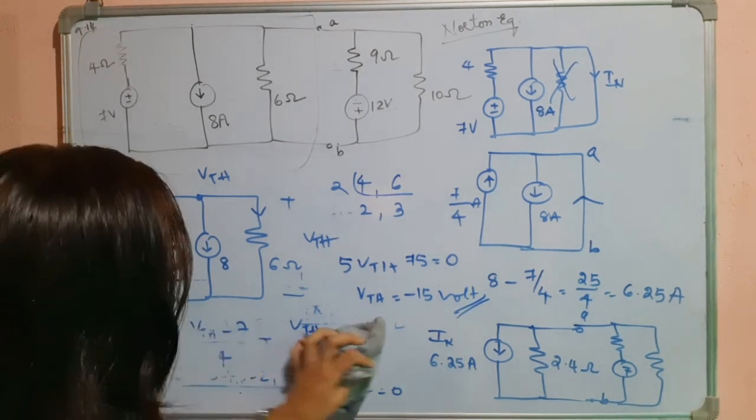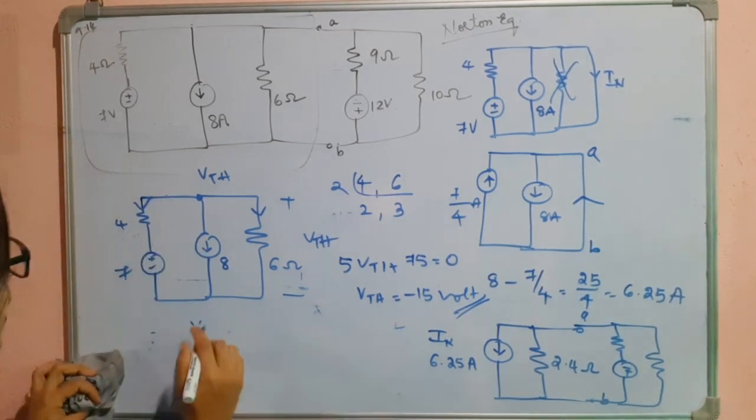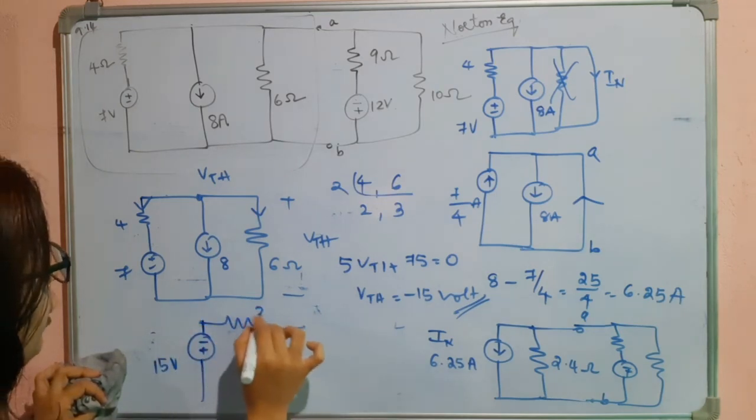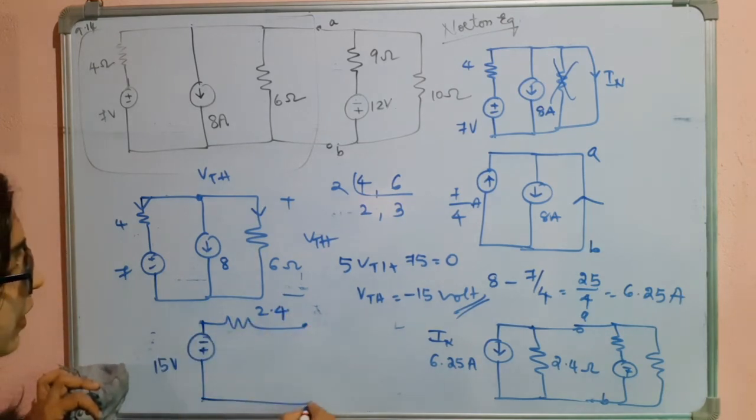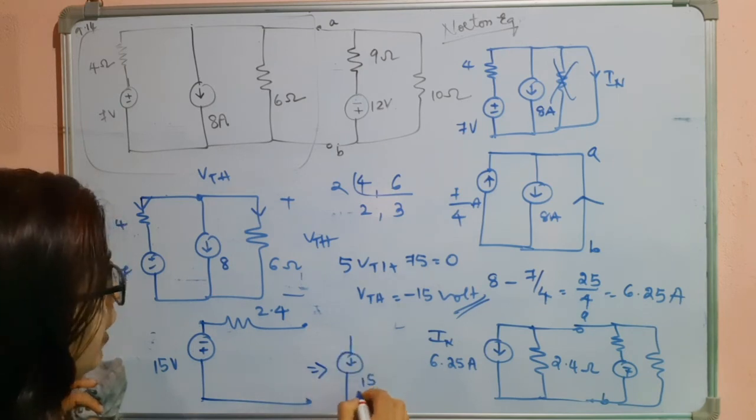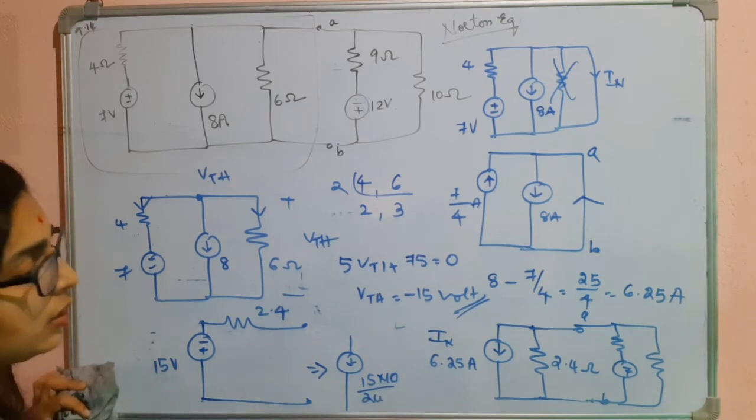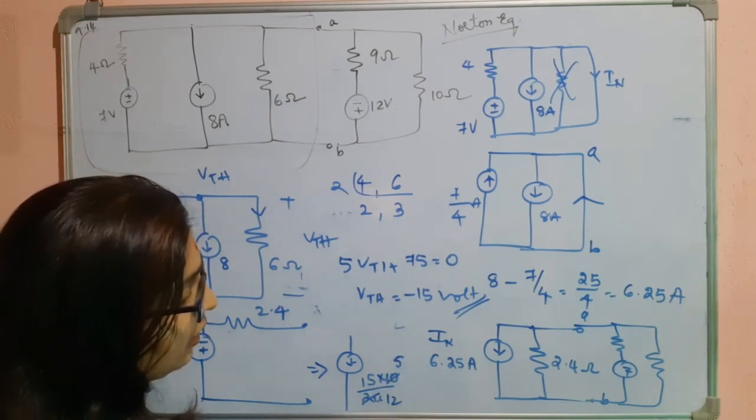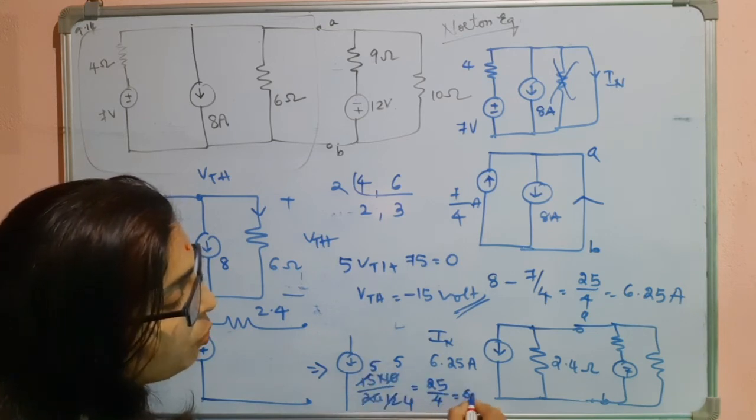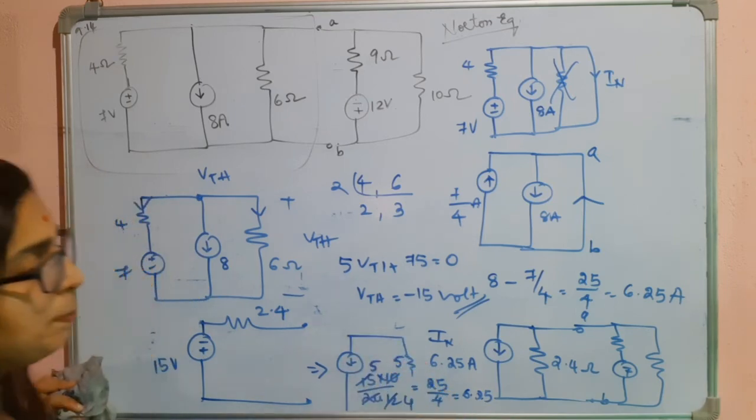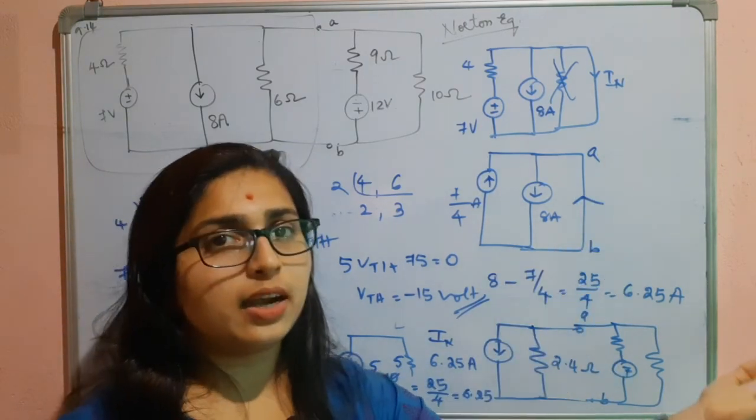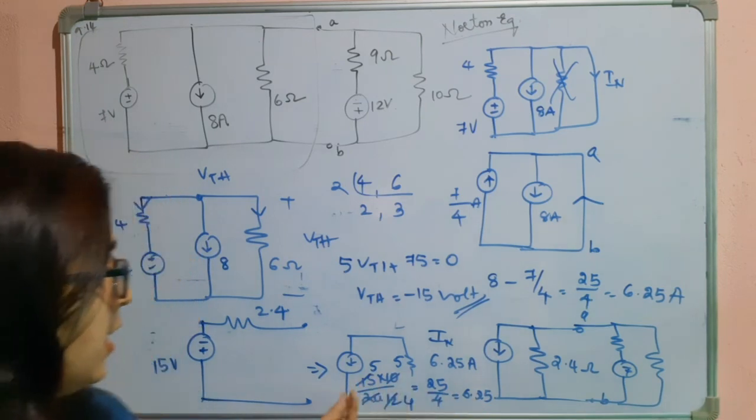So here what happens? Vth is minus 15 volts. So I will write this one like this, and Rn is 2.4, and here this will be this. So if you want to convert this to the current source, you know this one: 15 divided by 2.4. So this is 25 by 4, this is 6.25, and once again you will have the Rn in parallel. So if you consider the Thevenin's also, or if you consider the Norton's directly, you will arrive at the same answer.